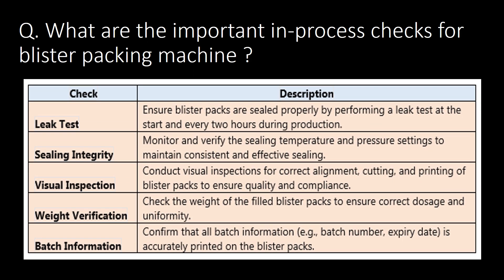What are the important in-process checks for a blister packing machine? You can refer to the table below for important in-process checks and their descriptions. These are: leak test, sealing integrity, visual inspection, weight verification, and batch information.